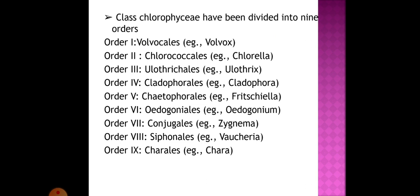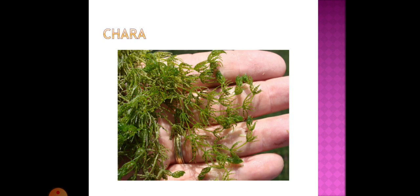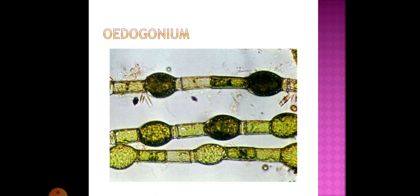Class Chlorophyceae is divided into 9 orders: Volvocales (example: Volvox), Chlorococcales (example: Chlorella), Ulvales (example: Ulva), Cladophorales (example: Cladophora), Chaetophorales (example: Fritschiella), Oedogonales (example: Oedogonium), Conjugales (example: Zygnema), Siphonales (example: Vaucheria), and Charales (example: Chara). Pictures of Volvox, Chara, and Oedogonium are shown.